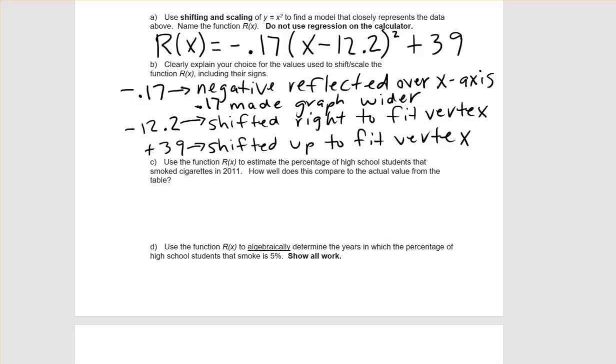Part B asks us to explain the choices for the values. The negative reflected us over the x-axis so that our parabola was facing down. The 0.17 made our parabola wider, and the negative 12.2 shifted our graph to the right to fit our vertex. The plus 39 shifted it up so that we could fit the vertex.